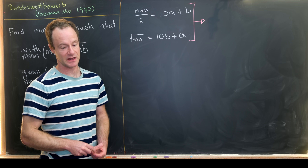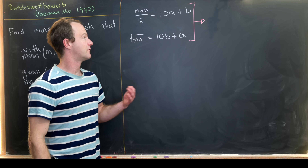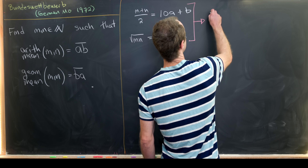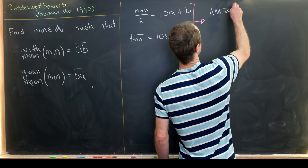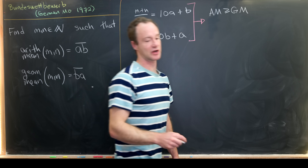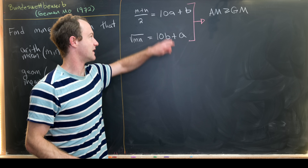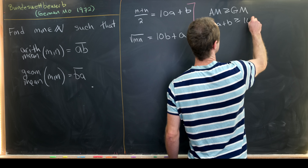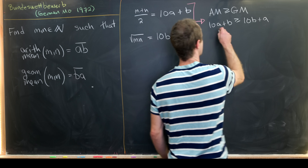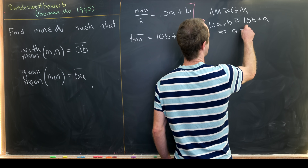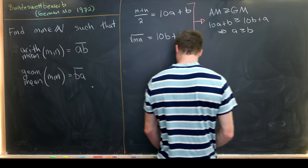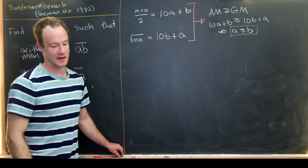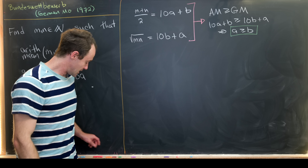Before any calculation, we know the AM-GM inequality: the arithmetic mean is greater than or equal to the geometric mean. In terms of a and b, that means 10a+b ≥ 10b+a, which simplifies to a ≥ b. That's a good first piece of information to keep in mind.